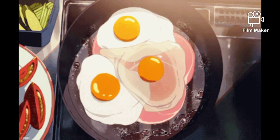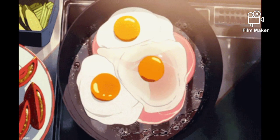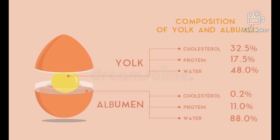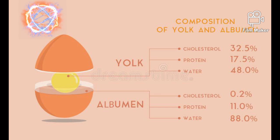The yolk is the unfertilized embryo in the egg. Although normally yellow, the depth of color will vary with the feed of the hen. The yolk is high in fat and protein and contains iron. The yolk is valued for the richness and texture it provides in both cooking and baking.